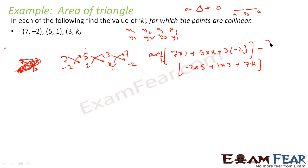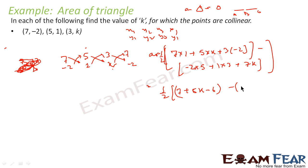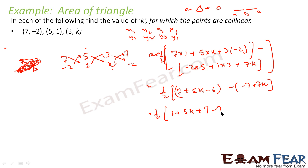The whole thing is 1/2. So what you get is 1/2 into (7 + 5k - 6) minus (-10 + 3 + 7k). Solving further, you get 1/2 into (1 + 5k + 7 - 7k), and this is equal to 0. So you get 5k - 7k = -2k, plus 8 equals 0. Solving this, you get k = 4.